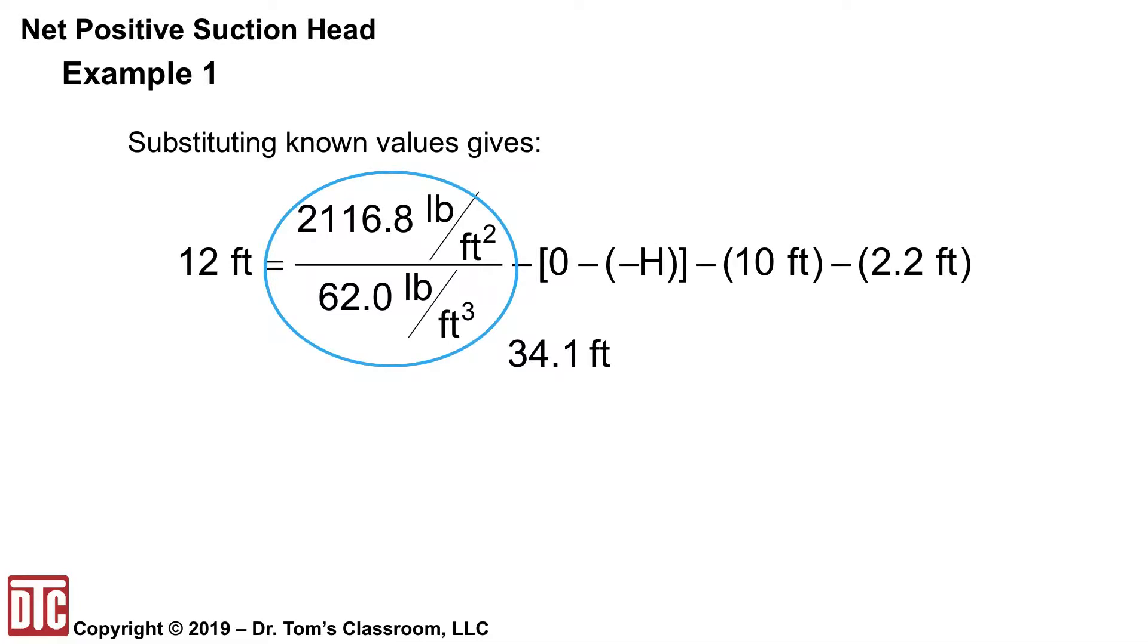Well on the left hand side then is the required, the 12 feet. The atmospheric divided by gamma is there and that turns out to be 34.1 feet. Subtract this zero minus a minus H. So what that is minus minus gives us a plus H, but we got another minus in there minus the 10 minus the 2.2.